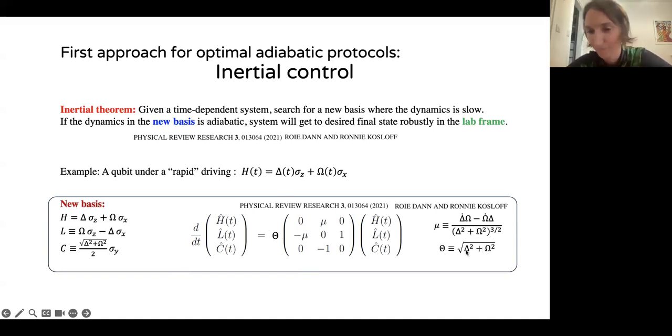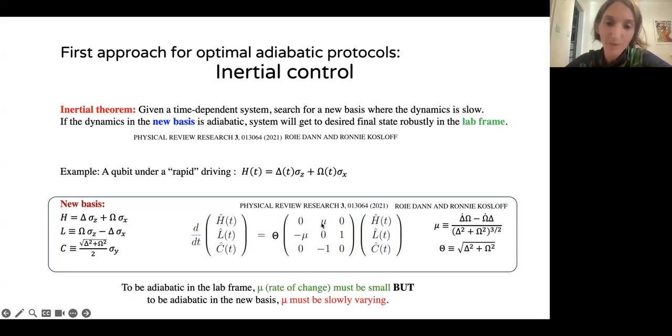Mu and theta are parameters defined on the right. Theta is the magnitude of delta and omega squared. And mu is essentially the adiabaticity parameter. It is the rate of change of the parameters divided by the magnitude of the energy gap. So in an adiabatic protocol, mu needs to be small. But in order to be adiabatic in this rotated basis, all we need is for mu to vary slowly. So computationally, this could be an advantage if we don't have to require that the fields vary slowly, only that the variation of the variation will be slow. Or in other words, we don't restrict the velocity, but we restrict the acceleration.